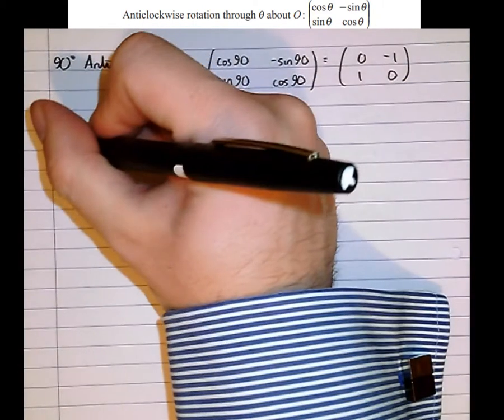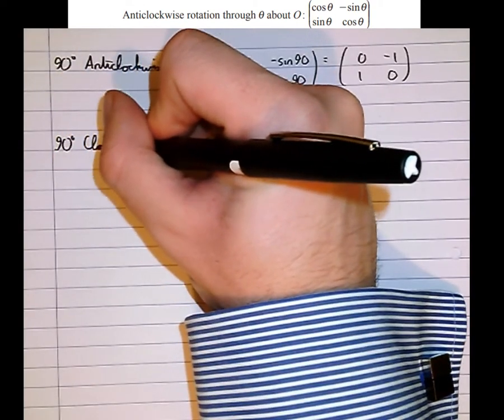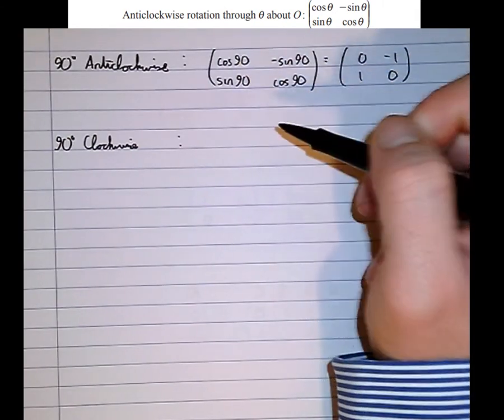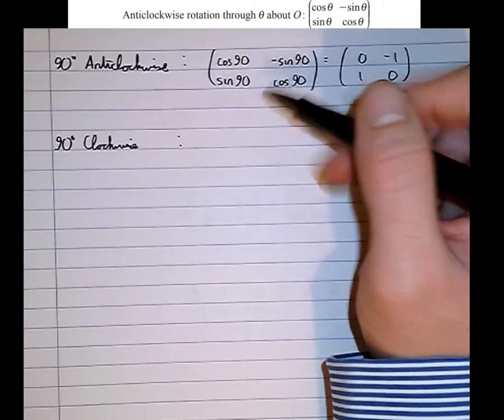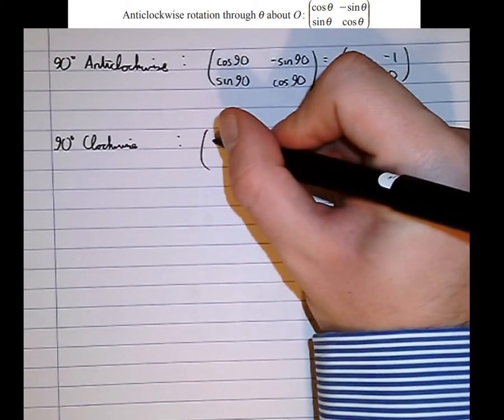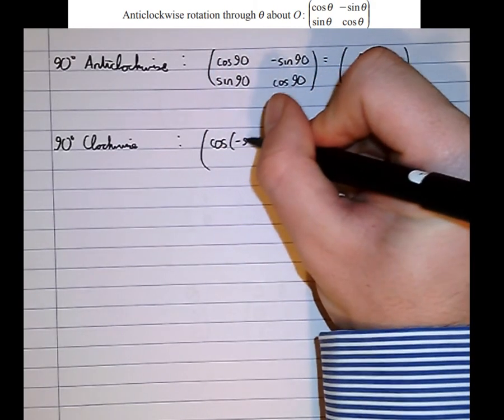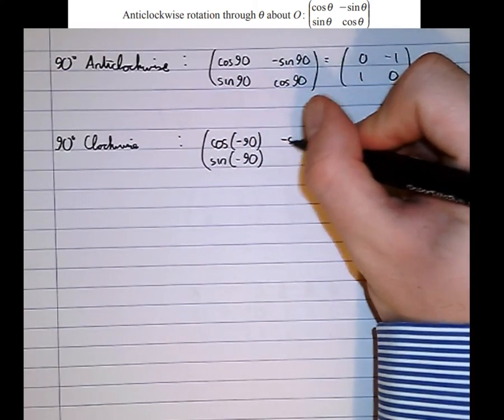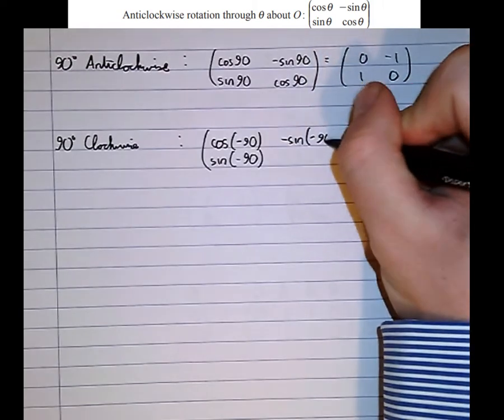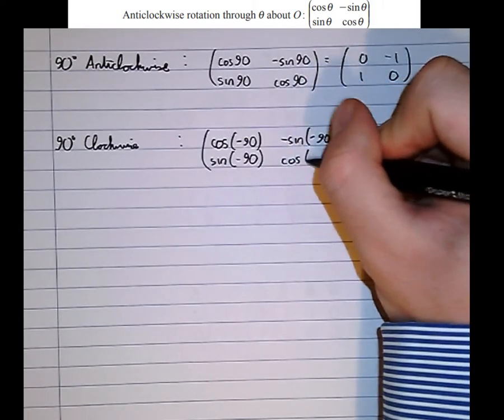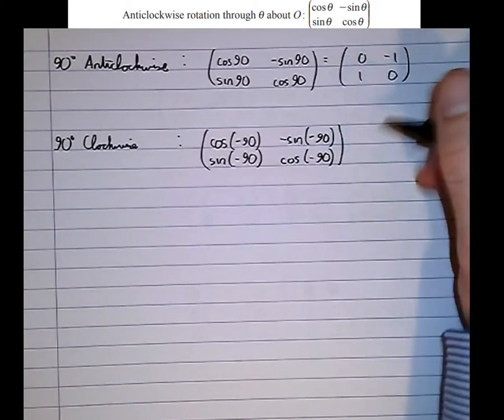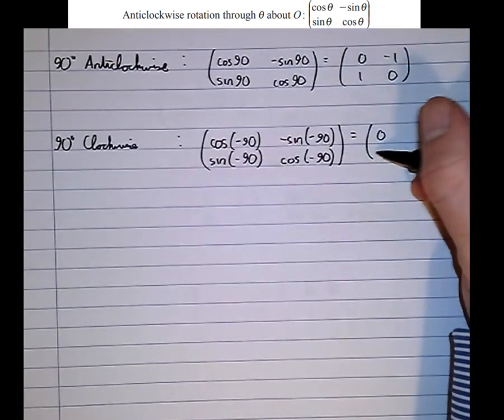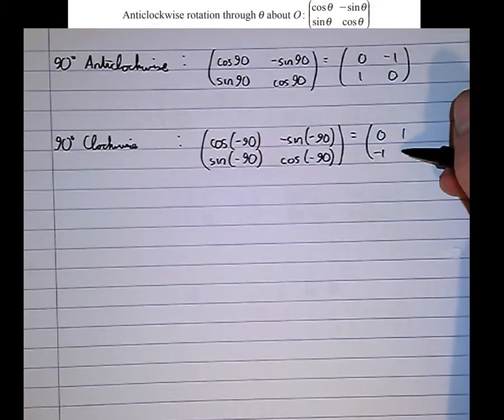Say I wanted instead 90 degrees clockwise. Well what I'd do, I'd simply put a negative angle in there. Positive angles are anticlockwise, so negative angles are clockwise. So cos of minus 90, sin of minus 90, minus sin of minus 90, and cos of minus 90 equals 0, then we've got minus 1, 1, and 0.